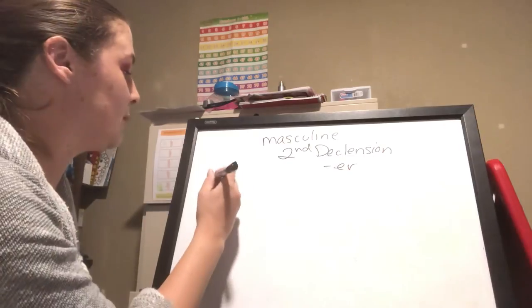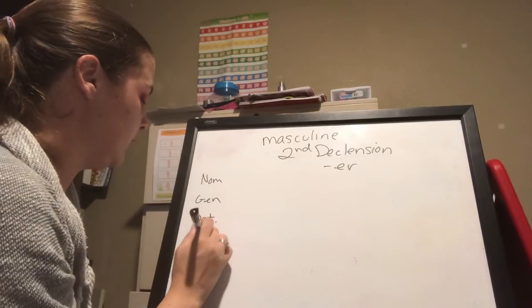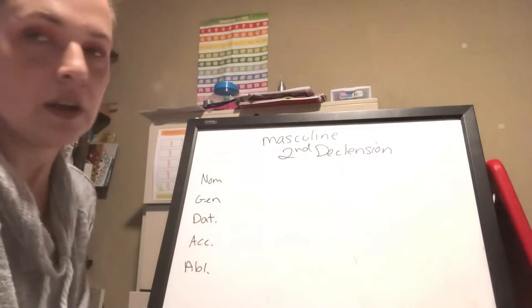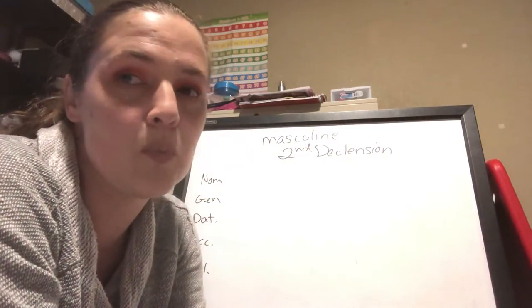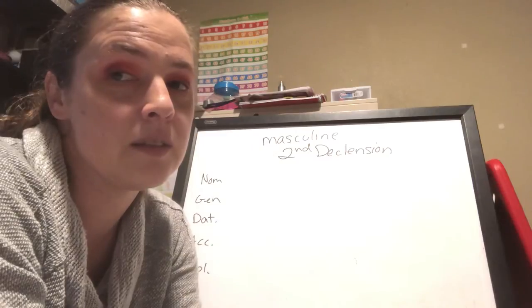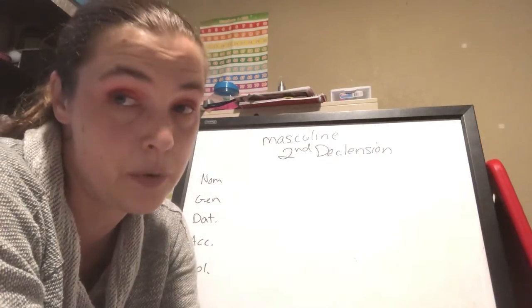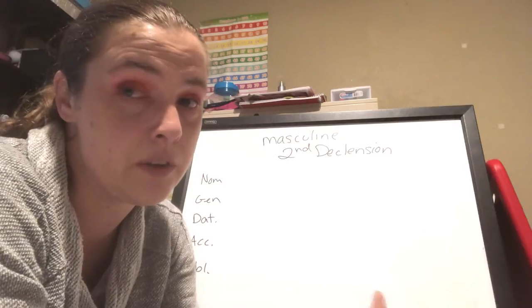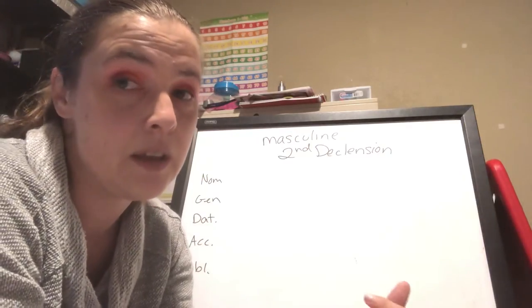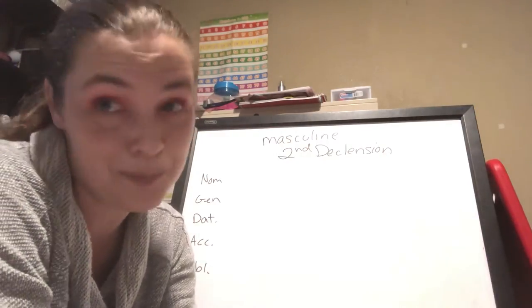The second declension family: nominative, genitive, dative, accusative, ablative. The thing with the ER endings is that sometimes the E is present for some words and sometimes it's not for others. You only learn this if you memorize the nominative and the genitive singulars when learning your vocabulary.